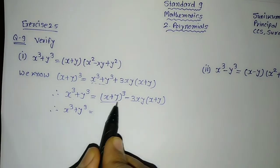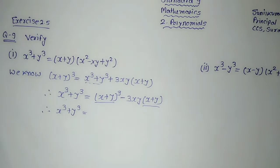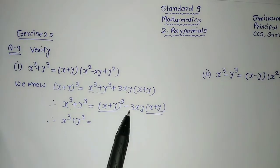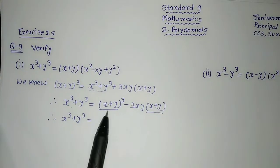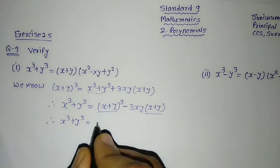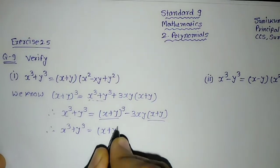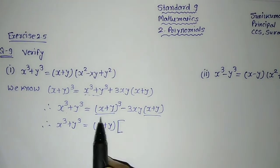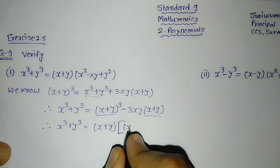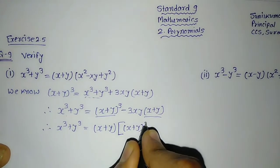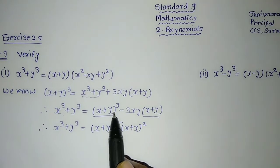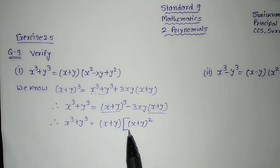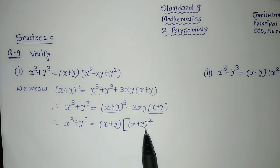Now you can see this term and this term — is there something common? Yes, x plus y is common in both terms. This is first term minus this second term, and in both, x plus y is common. So I will take x plus y common. Then inside the bracket, what is remaining? As out of the cube, one factor has gone out, so what is remaining is x plus y whole square. And from the second term, x plus y has gone out, so what is remaining is minus 3 into x into y.